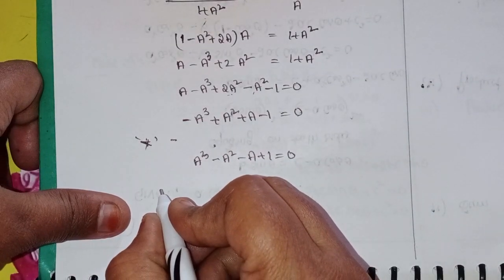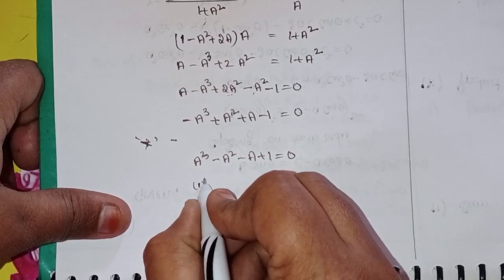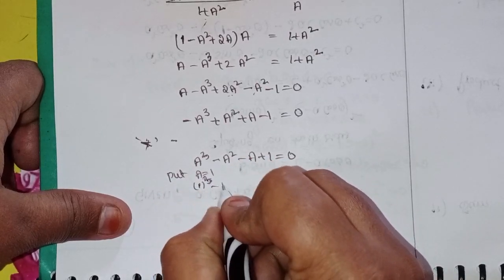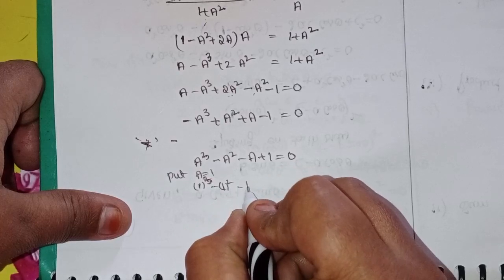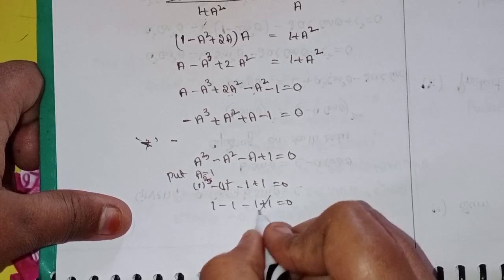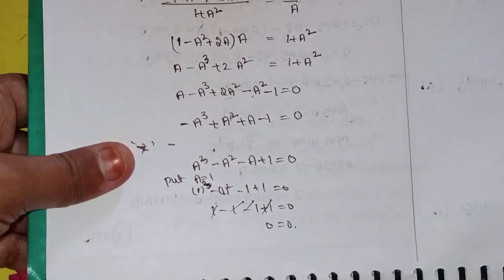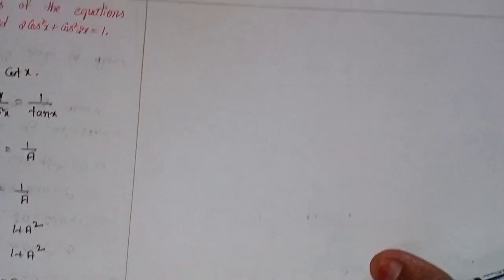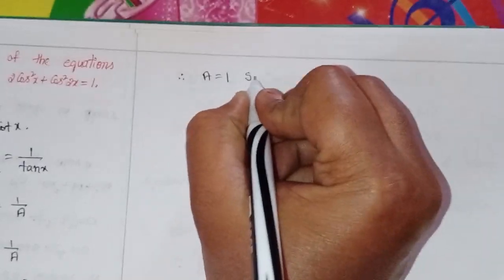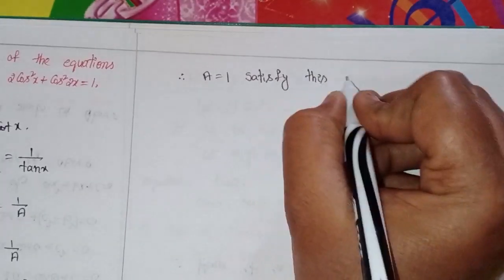Suppose I take a equal to 1. Does it satisfy this equation? Substituting: 1 cubed minus 1 squared minus 1 plus 1 equals 1 minus 1 minus 1 plus 1 equals 0. Yes, a equal to 1 is a solution — one of the solutions of the equation.